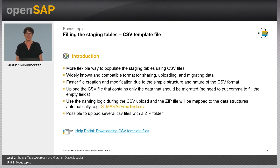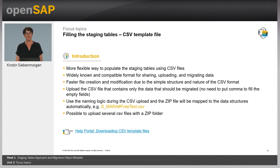CSV file support was introduced with SAP S4HANA 2022. Working with CSV files is a more flexible way to populate the staging tables. It's a widely known and compatible format for sharing, uploading, and migrating data. File creation and modification are faster due to the simple structure of CSV format. You only need to fill in the data that should be migrated — no need to add commas for empty fields. You can also change the order of columns. If you use the naming logic provided by the SAP S4HANA Migration Cockpit, the zipped CSV upload file is automatically mapped to the relevant staging tables.